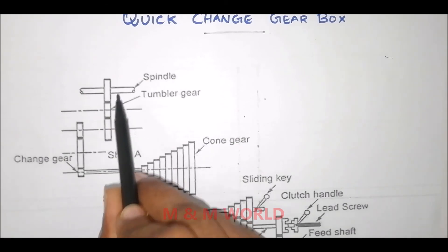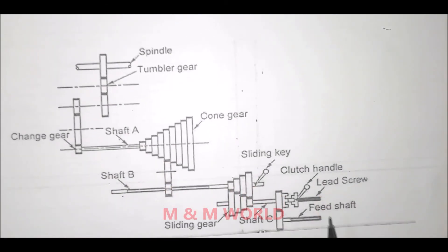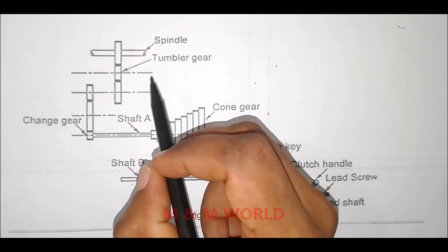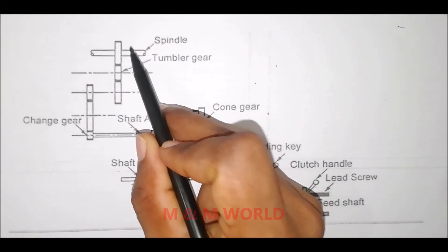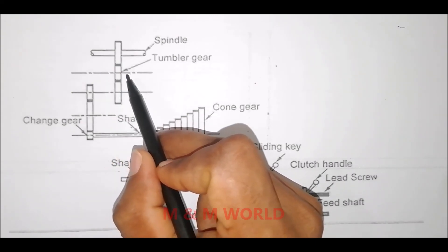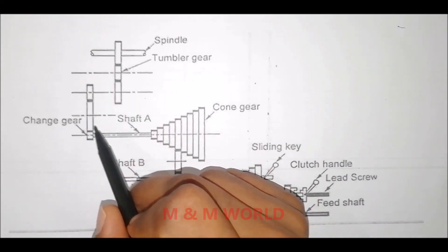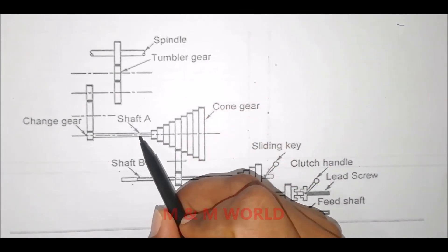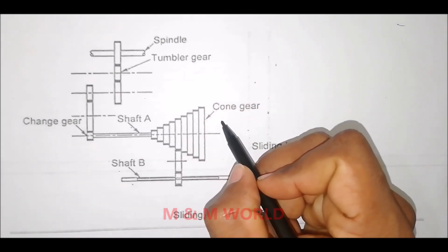The motion is transmitted from the spindle gear through the tumbler gears and change gears to shaft A. In shaft A, nine cone gears are keyed, so nine different speeds may be obtained by shaft B by using a sliding gear.